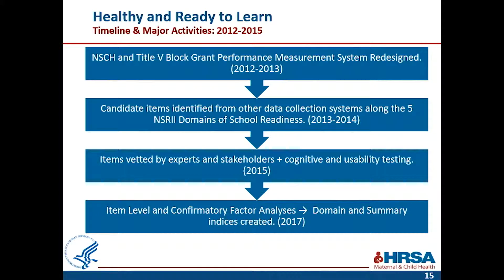When we had a set of candidate items, we went back out to experts and state-level stakeholders, ultimately narrowing to 22 items added to the 2016 national survey. Once we had our first year of data, we worked with Child Trends, a nonprofit in Washington DC, to conduct confirmatory factor analyses and develop the pilot national outcome measure.